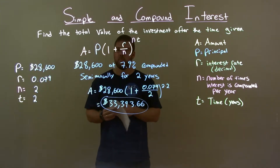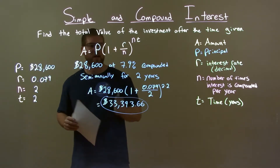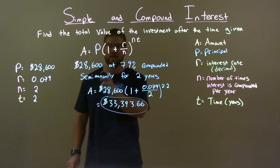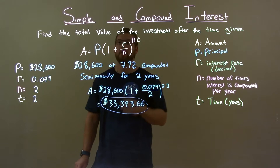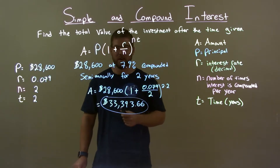Quick recap: we're given $28,600 at 7.9% compounded semi-annually for two years, and we have to find the total value of that investment.